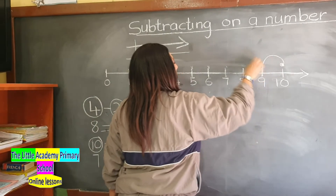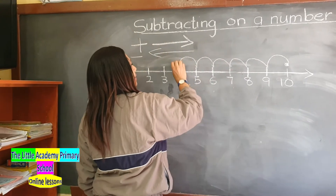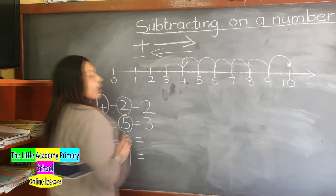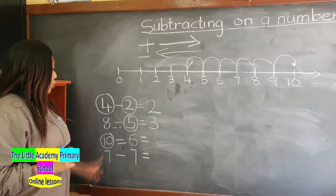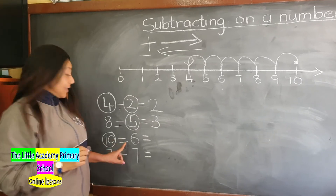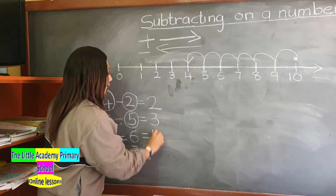1, 2, 3, 4, 5, and 6. So we land on number 4. Which means 10 subtract 6 is 4.